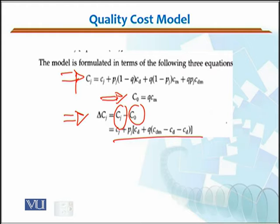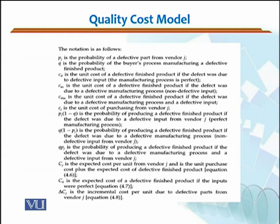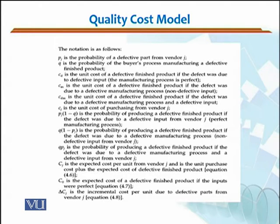Let us see the abbreviations so that the model is clear. What is Pj? Pj is the probability of a defective part from vendor j. If P represents good items, then 1 minus P, or Q, represents bad items. What is Q? Q is the probability of the buyer's manufacturing process producing a defective finished product. So for example, Pj could be 5% (0.05) for one vendor, or 10% for another vendor.